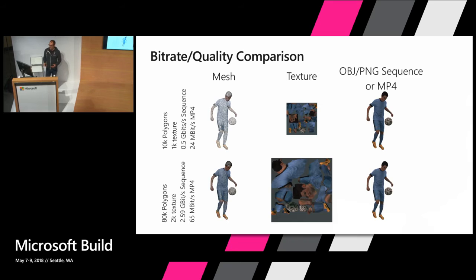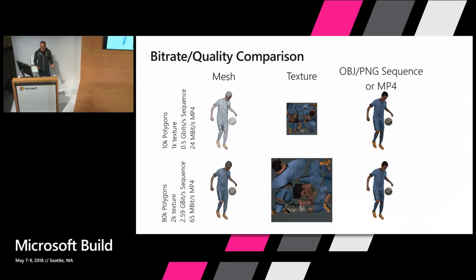You can set parameters at compression time — things like poly count and texture size. A 10K poly and 1K texture typically yields about 50 megabits per second as an OBJ or PNG sequence. When we compress down to an MPEG-4, we get that down to 24 megabits per second — that's on the lower quality end. If you're targeting something like the Samsung Odyssey and want a higher quality product, we can use 80K polys and 2K textures, and even though that would be nearly 2.6 gigabits per second as a sequence, it compresses down to about 65 megabits per second as an MPEG-4.